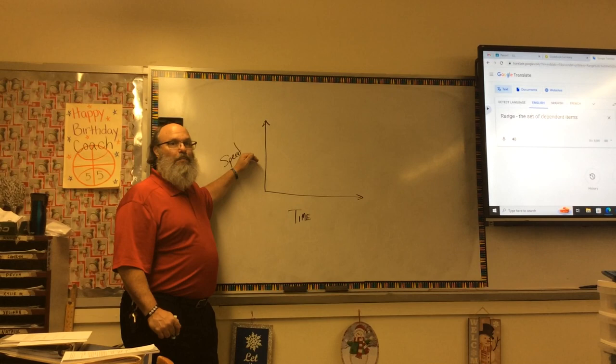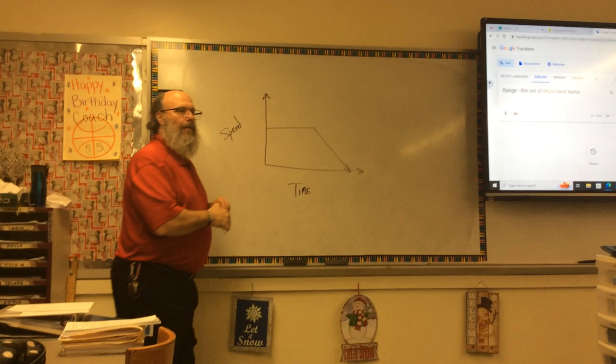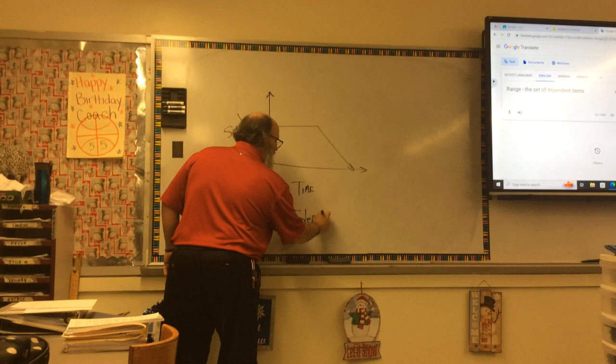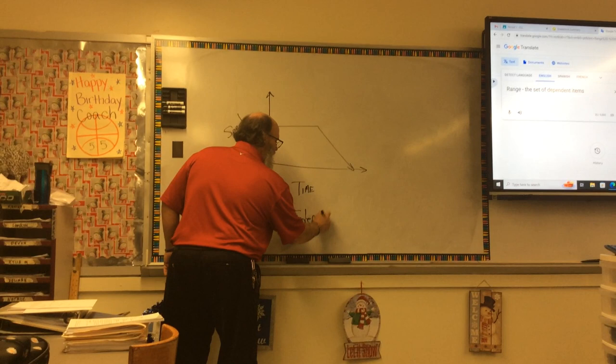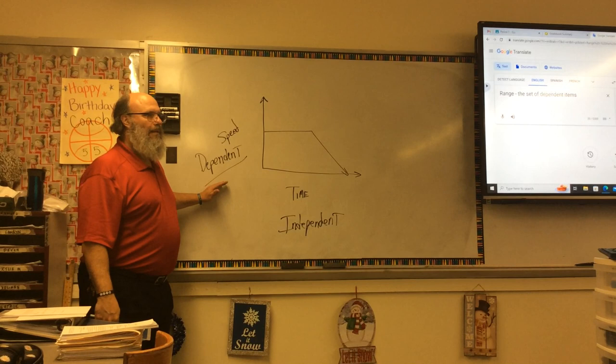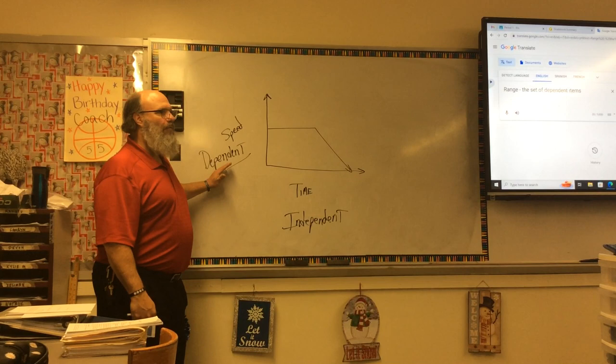So if we go back to this example, the speed is dependent on the time, right? You're moving at a steady rate. You're slowing down. This is independent. This is dependent. We put independent down here, dependent over here, up here.